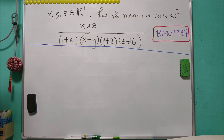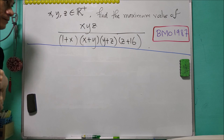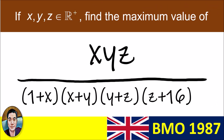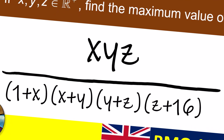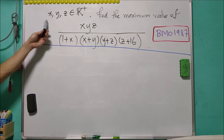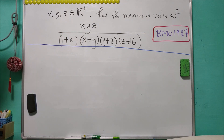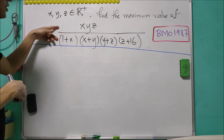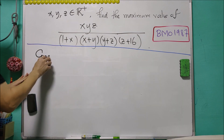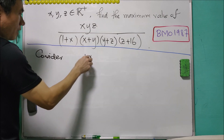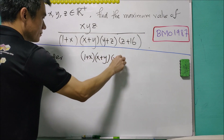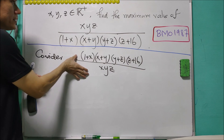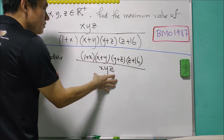Given that X, Y, Z are positive real numbers, find the maximum value of this expression. Since X, Y, Z are positive real numbers, it will be easier to find the minimum value of the reciprocal of this expression. So we consider the reciprocal and wish to find its minimum value.